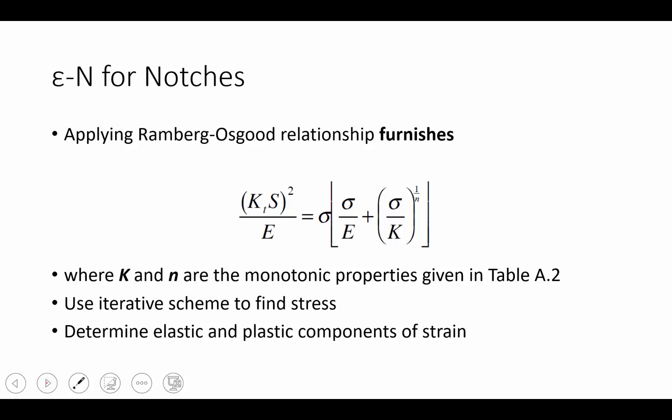Using this relationship and applying the Ramberg-Osgood equation furnishes the following equation, where we include both Neuber's constraint as well as the Ramberg-Osgood relationship with the constants K and n coming from our monotonic properties in Table A.2. We can solve for the stress—this is a nonlinear equation—using some iterative scheme, just a numerical method, and be able to predict how our monotonic tensile curve is modified by enforcing the Neuber relationship. We can then determine the elastic and plastic components of strain accumulation.